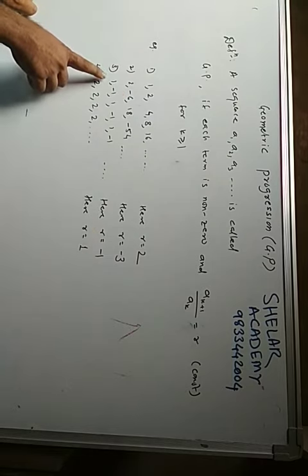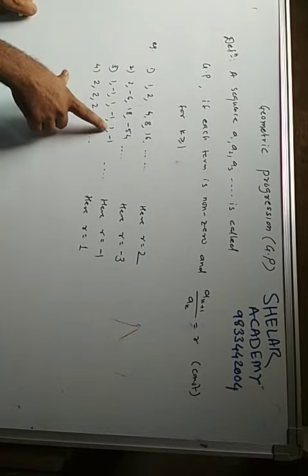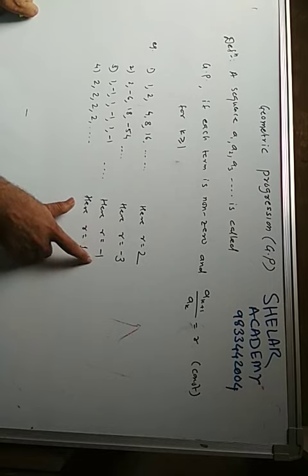Third example is very easy again: 1, minus 1, 1, minus 1, 1 and minus 1. Here the ratio R is equal to minus 1.